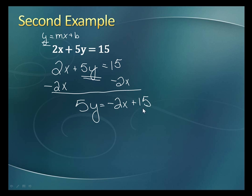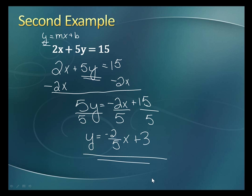That leaves me with 5y equals negative 2x plus 15. That's great! But now I need the y by itself. So I'm going to divide every part by 5 on both sides of the equation. So y equals negative 2 fifths x plus 3. And now it's ready to put into the calculator.